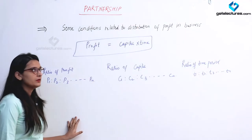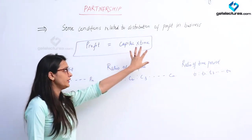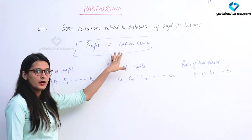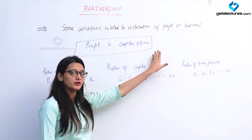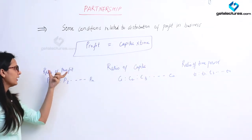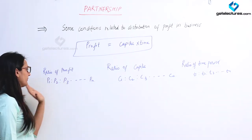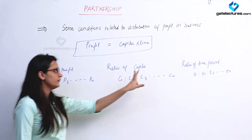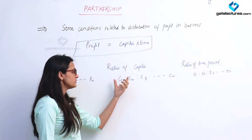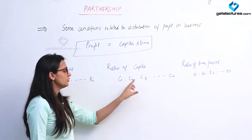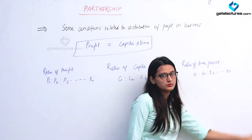Now we have some conditions to distribute the profit in a business. First, profit must be equal to capital into time. The notation for profit ratio is P1 : P2 up to Pn. For capital we denote it by C — C1 : C2 and so on. For time period, the ratio is T1 : T2 and so on.